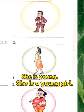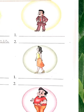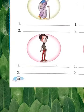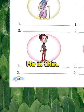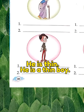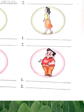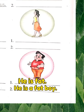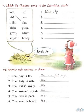Next, dekhiye yahan pe ek patla ladka hai. Iske liye kya banayenge: 'He is thin' — woh patla hai. Dusra sentence: 'He is a thin boy.' Yahan pe phir mota ladka hai: 'He is fat' — woh mota hai. Aur dusra banayenge: 'He is a fat boy.'